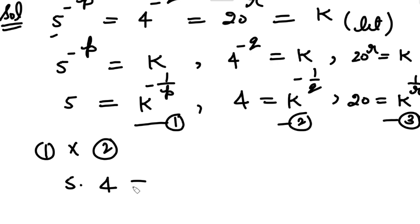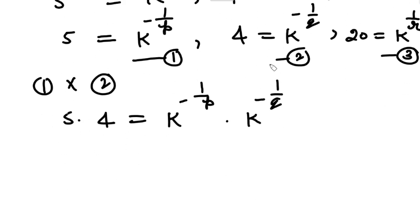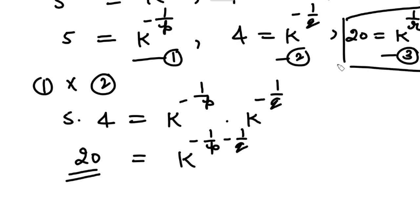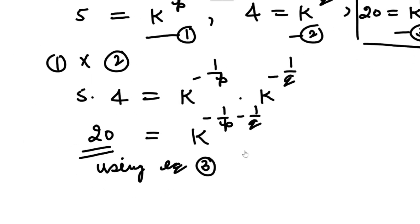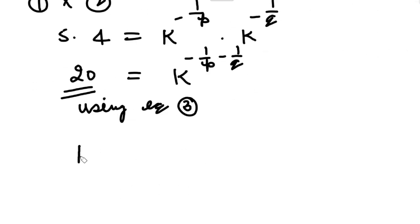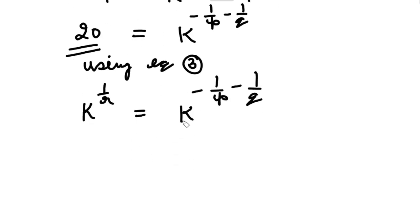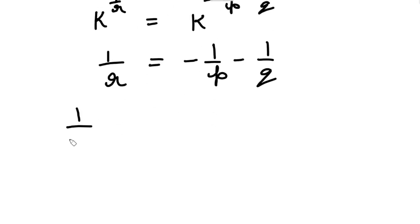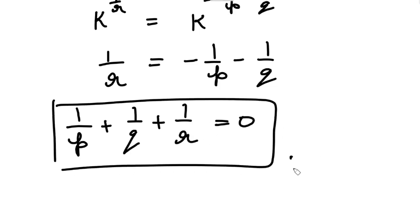Multiplying relation 1 by relation 2: 5 multiplied by 4 equals K raised to the power (minus 1/P) multiplied by K raised to the power (minus 1/Q). Since 5 times 4 is 20, and for the same base powers add, this equals K raised to the power (minus 1/P minus 1/Q). Substituting the value of 20 from relation 3 (20 equals K raised to the power 1/R), since the bases are equal, the indices are equal. Bringing all terms to one side: 1 upon P plus 1 upon Q plus 1 upon R equals 0, which is the required result.